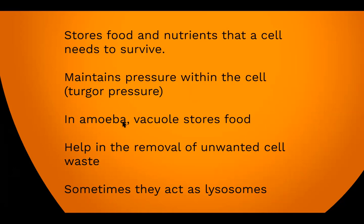Amoeba, being an animal cell, does not have a cell wall, so this incoming water can result in the bursting of amoeba. To prevent this, there is a special vacuole called the contractile vacuole. The contractile vacuole forms at the rear or posterior end of the amoeba, starts collecting extra water, and intermittently bursts open to release that water. The moment it bursts, another new contractile vacuole forms at the same place, starts collecting water, grows, and eventually bursts again — this process is continuous.